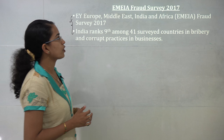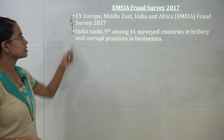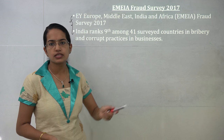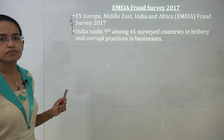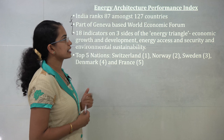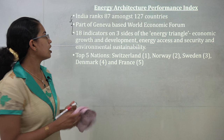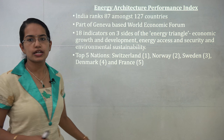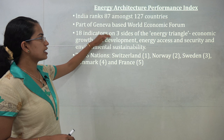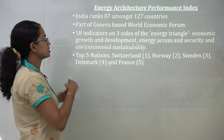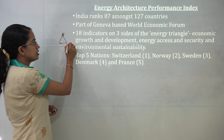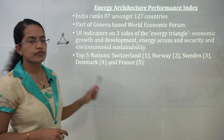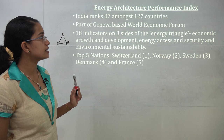The EMEIA Fraud Survey 2017, also known as EY Europe, Middle East, India and Africa Fraud Survey: India ranks 9th among 41 countries surveyed for corrupt practices and bribery. The Energy Architecture Performance Index: India ranks 87 of 127 countries, part of the Geneva-based World Economic Forum. 18 indicators are measured on three sides of the energy triangle: energy growth, energy access, and environmental stability. The top nations are Switzerland, Norway, and Sweden.